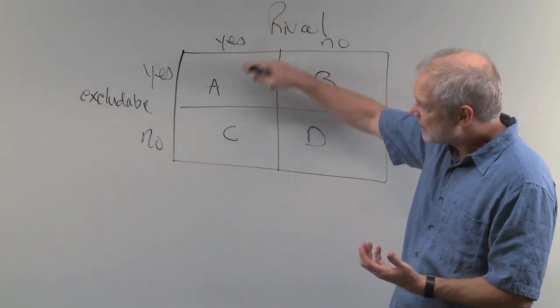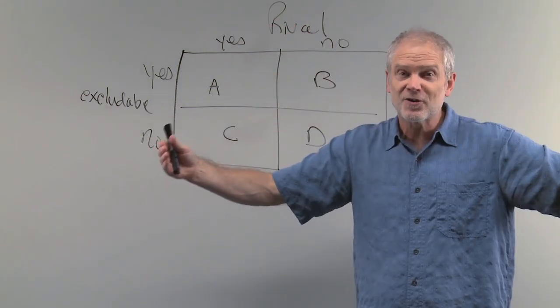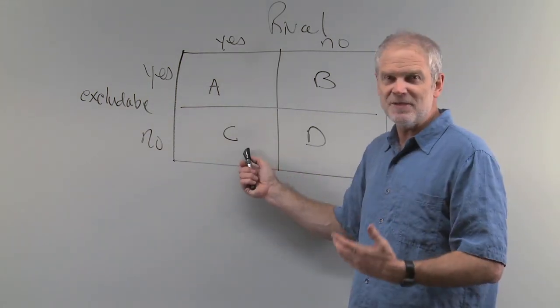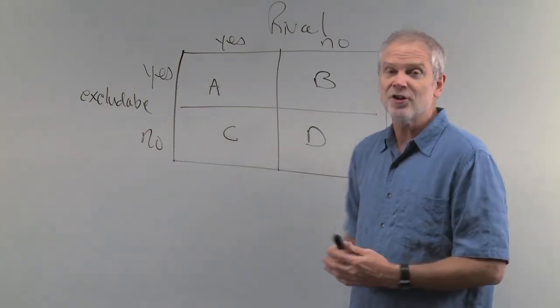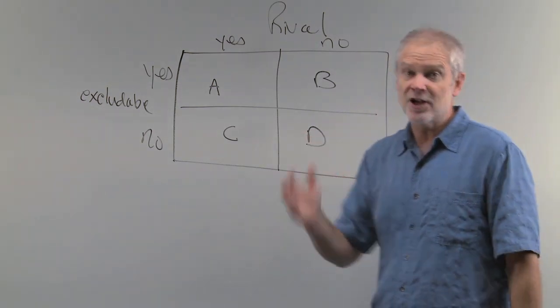So it's rival in consumption, but it's not excludable. Electricity is going out all over the grid. I can't really exclude anybody, but the consumption is going to hurt us. So what's the answer? In this particular case, economists say charge.